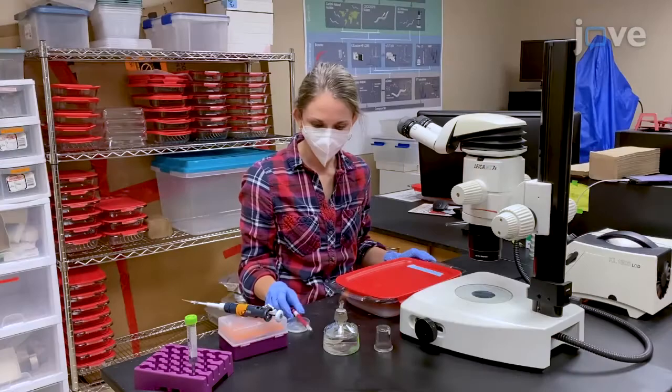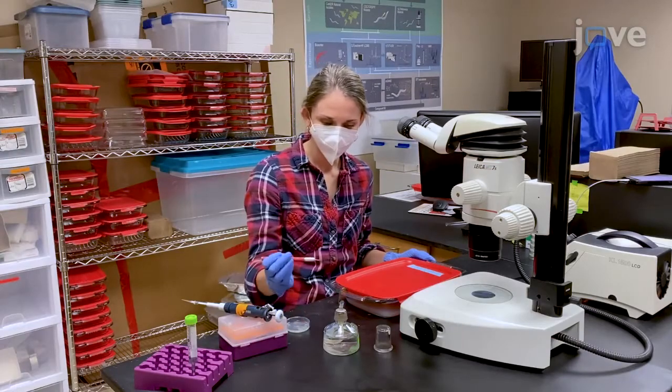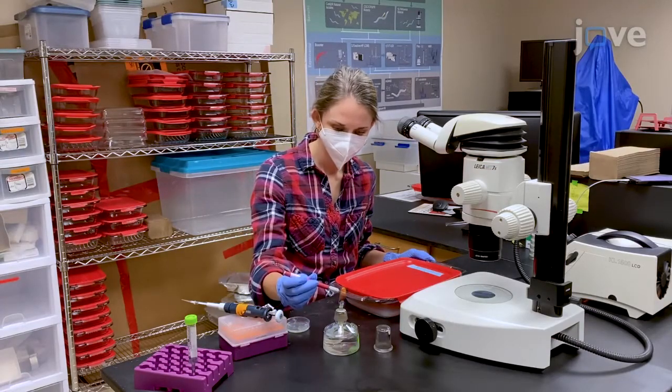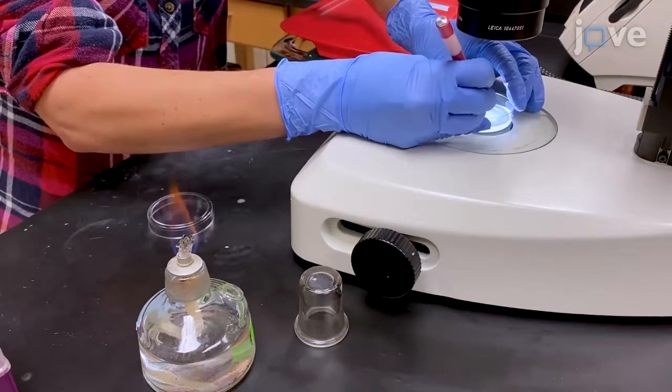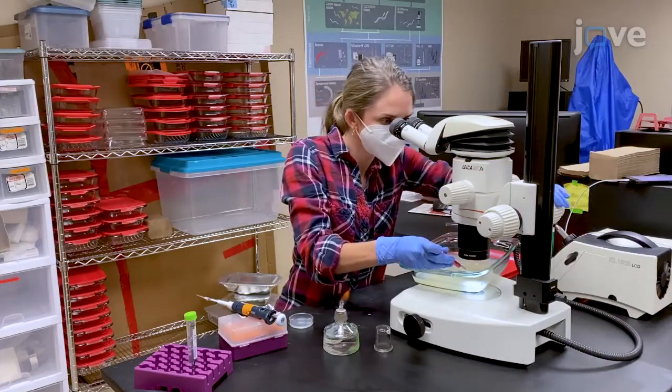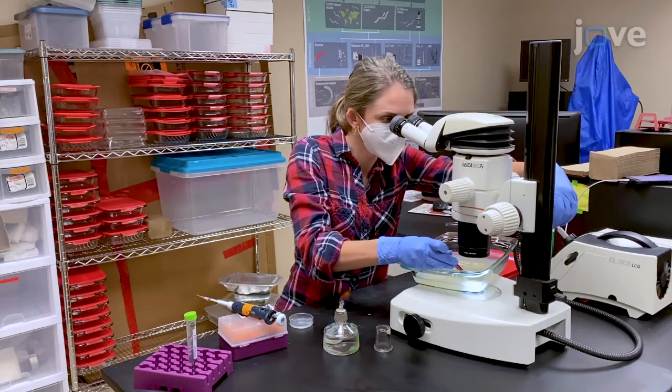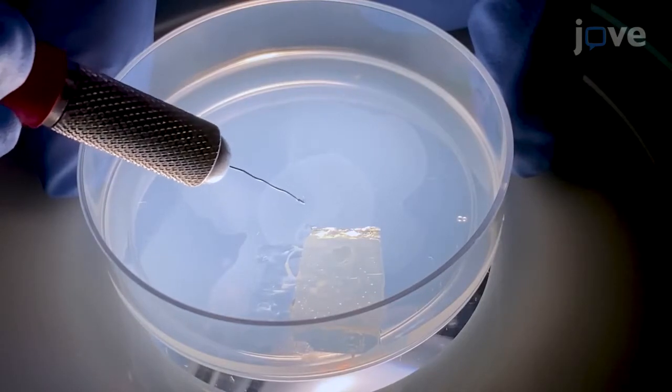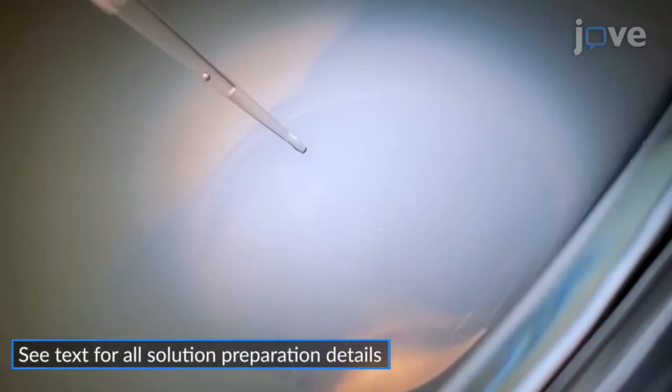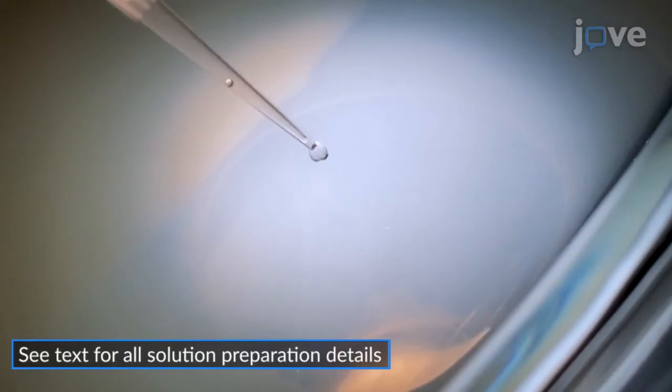For spot bleaching of gravid adults onto large-scale culture plates, flame a worm pick over a Bunsen burner and use the pick to scoop fresh E. coli from the edge of the bacterial lawn onto a large-scale culture plate. Pick a single gravid adult from the fourth chunk plate for spot bleaching and add five microliters of freshly prepared alkaline hypochlorite solution into one corner of the large-scale culture plate away from the E. coli lawn.